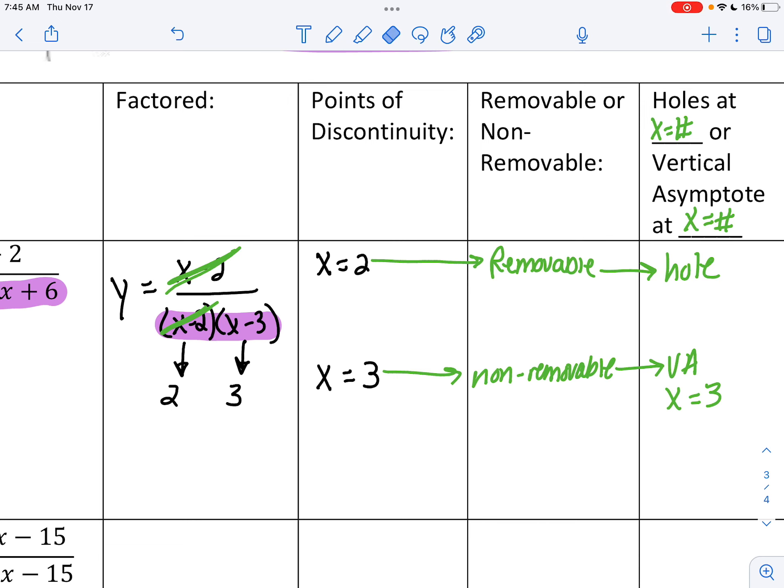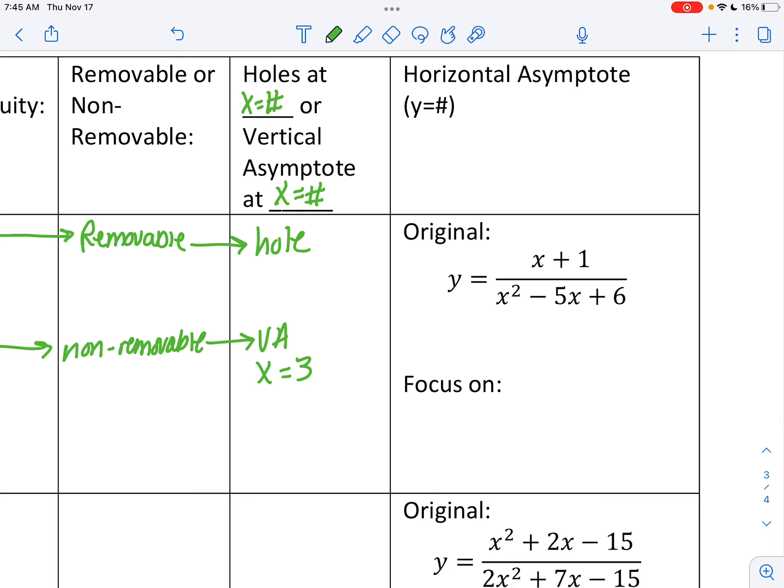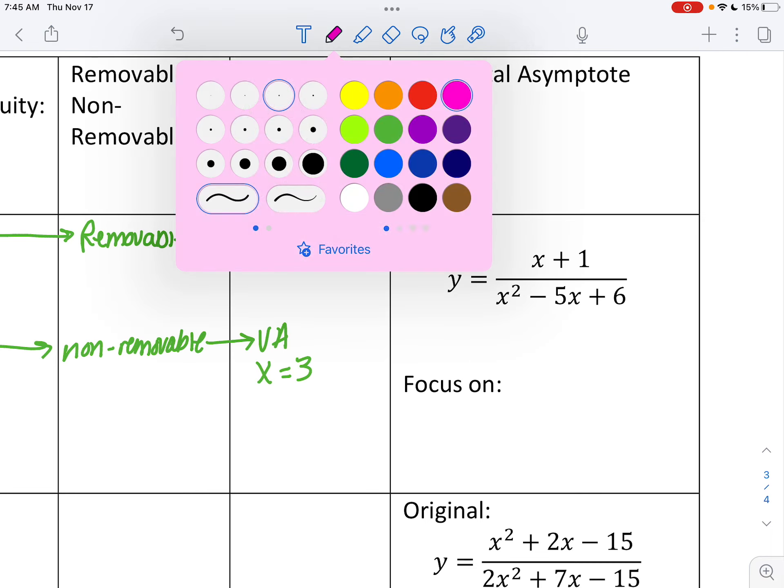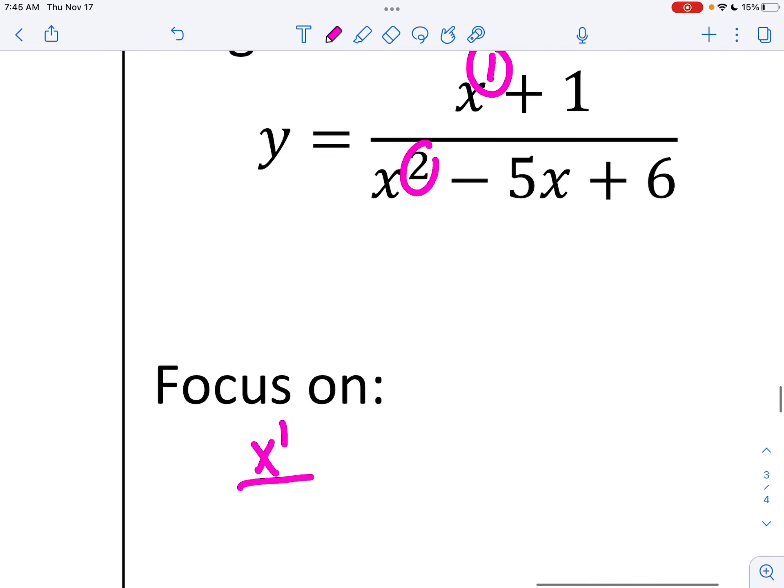All right. If you guys want, go ahead and go to Desmos and look at those. I do have more. Horizontal asymptotes. Okay. Horizontal asymptotes deal with the degree in the numerator, which means the highest exponent, and then the degree in the denominator, which is the highest exponent in the denominator. What's the highest exponent you see in the numerator? One. That is correct. What's the highest degree you see in the denominator? Two.